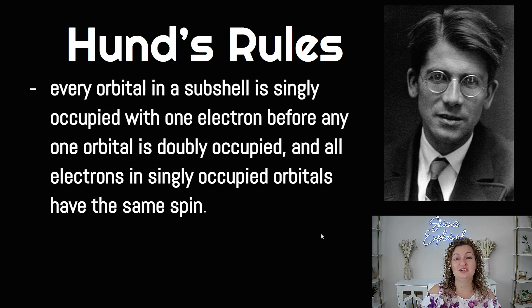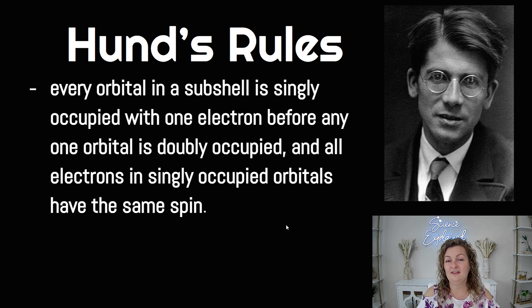And then we have Hund's rule, which is our last rule or principle that you have to know. And that is every orbital in a subshell is singly occupied with one electron before any one orbital is doubly occupied. And all electrons in singly occupied orbitals have the same spin. In other words, this is exactly what we've been doing. We're only occupying each one with one up and one down, so opposite spins.